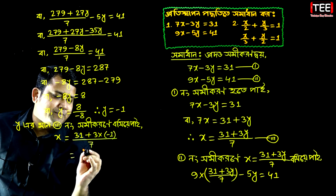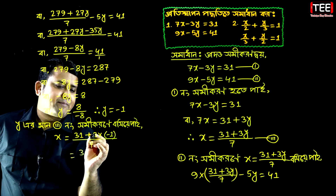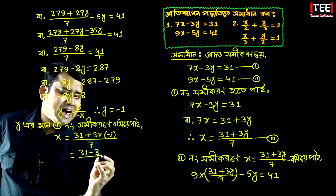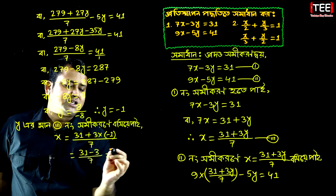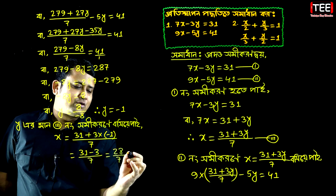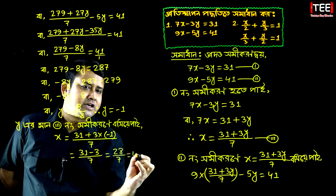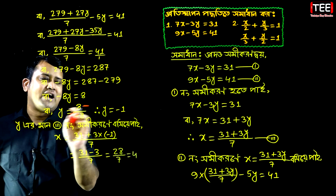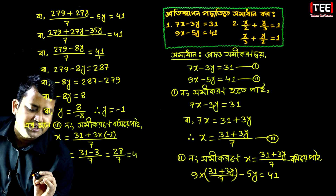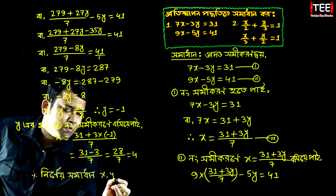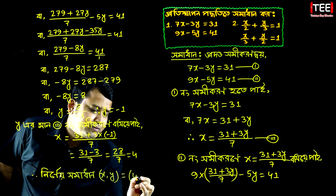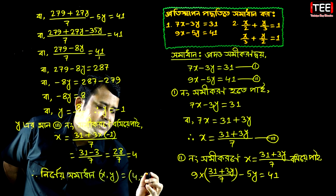We can see 31 plus minus 3, minus 3, minus 7 — equal to 31 minus 3, minus 28, minus 7. So we can see that y is equal to minus 1.